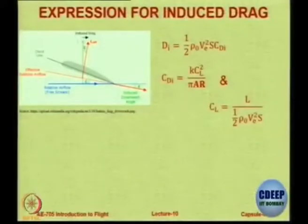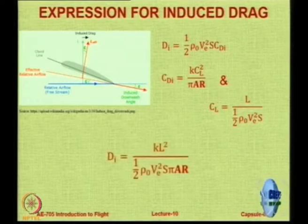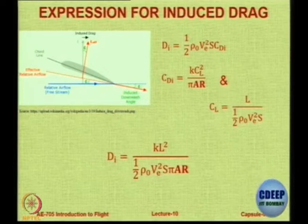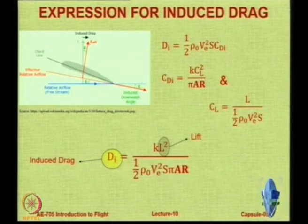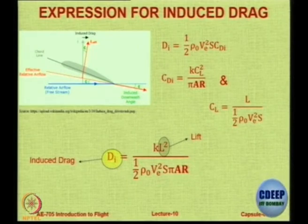Let us derive the expression for induced drag. The induced drag coefficient C_Di is basically a function of the square of the lift coefficient and the aspect ratio of the wing. For level flight, C_L = L / (½ρV²S). Therefore, induced drag will be obtained as a function of L² and K. The parameters that affect induced drag: first is lift — an aircraft like the Airbus A380, which has more lift than a Cessna 172, will have more induced drag at the same speed. An aircraft with a very high aspect ratio will have lower induced drag compared to an aircraft with a low aspect ratio.